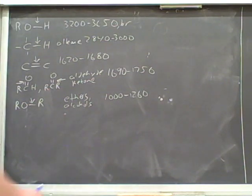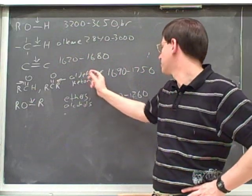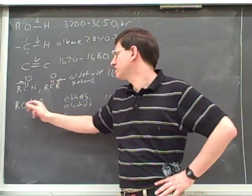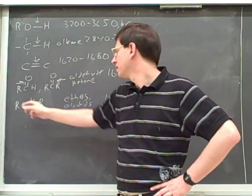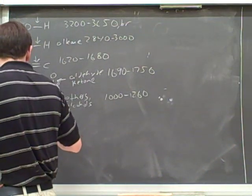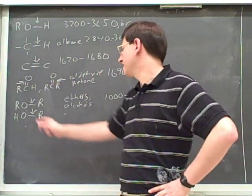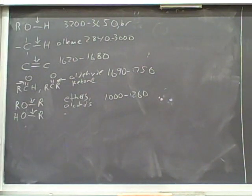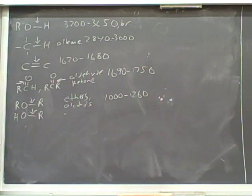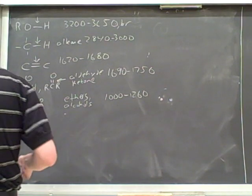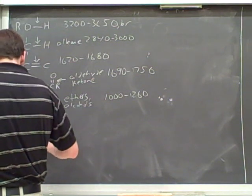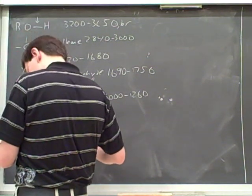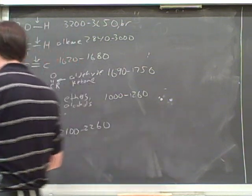Here are a couple more bands that might be helpful. Here are the aldehyde and ketone absorptions, and here's the absorption between an oxygen and a carbon in an ether or an alcohol. The absorption for the C-O bond in an ether or alcohol is in this region, and here's the absorption for alkynes.